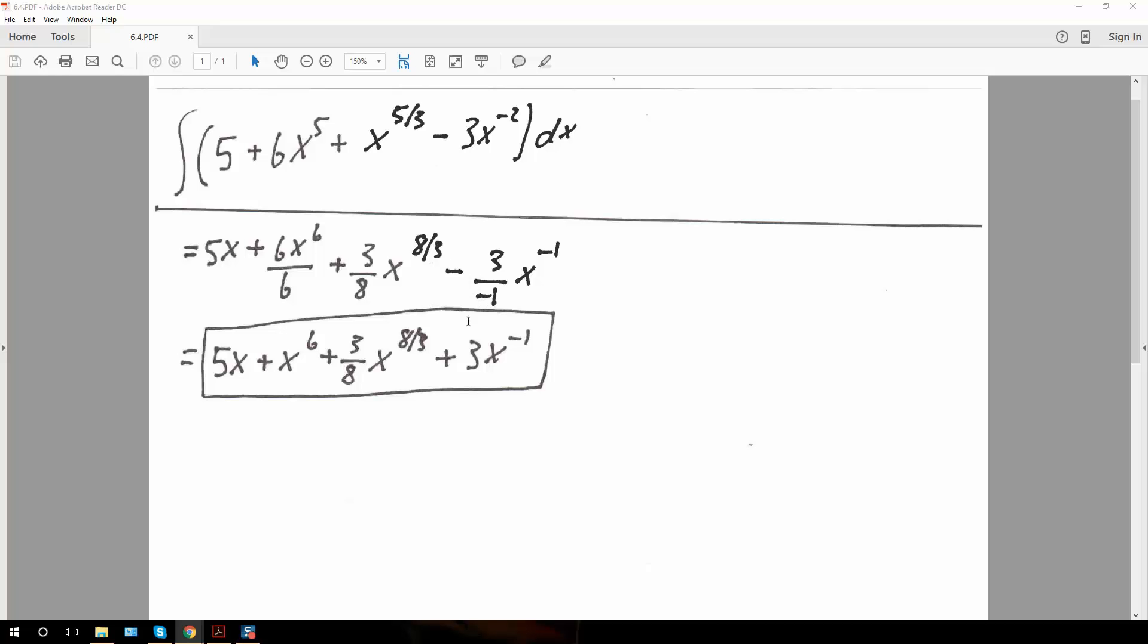Negative negative cancels out, and we get a positive. So we would have plus 3x raised to the negative 1, and that's all we need to do.